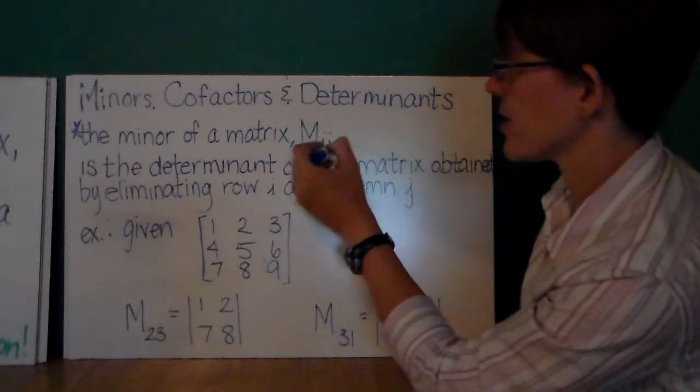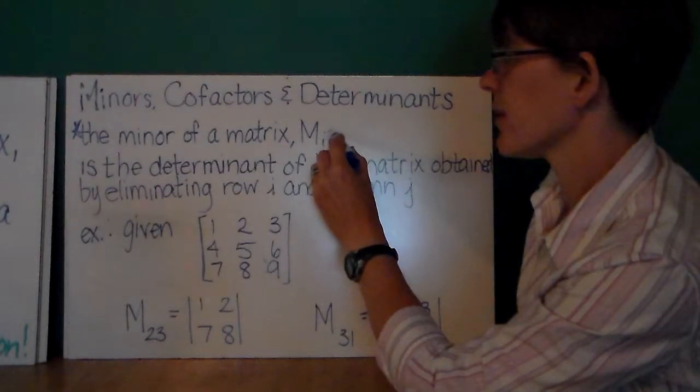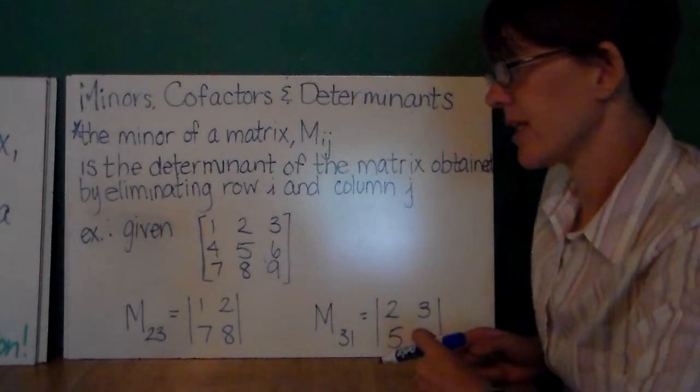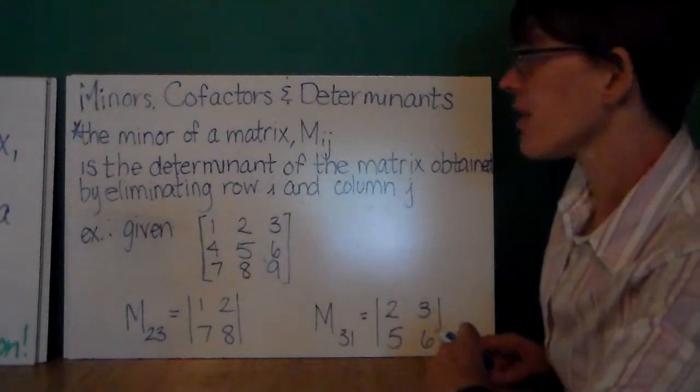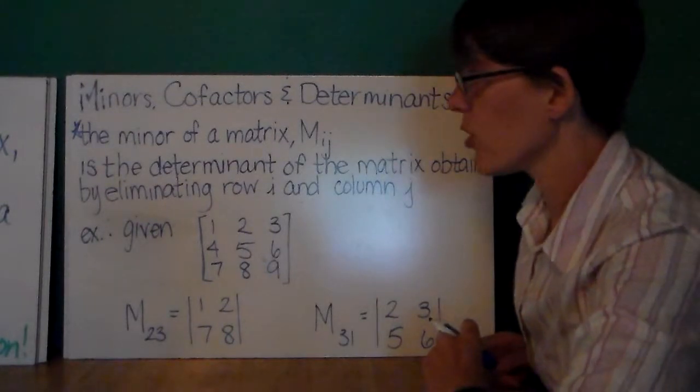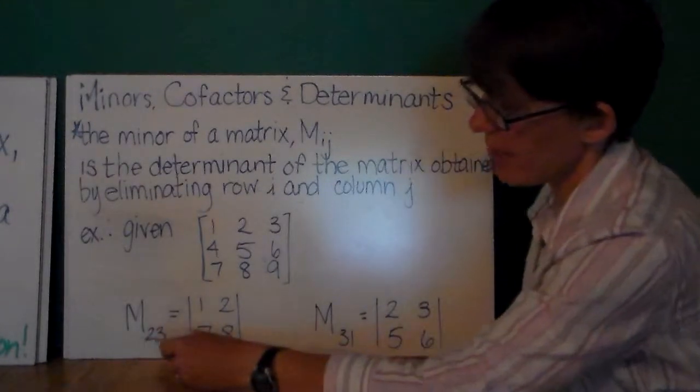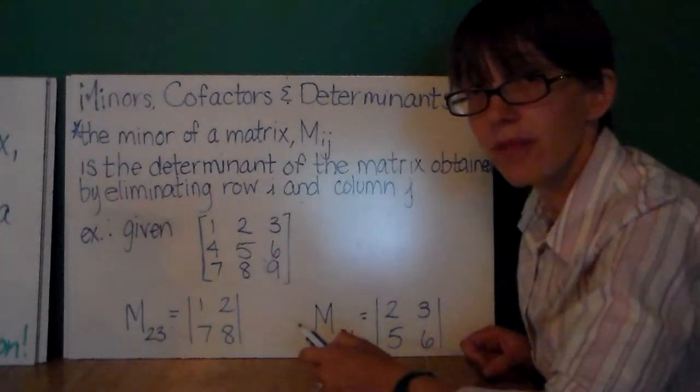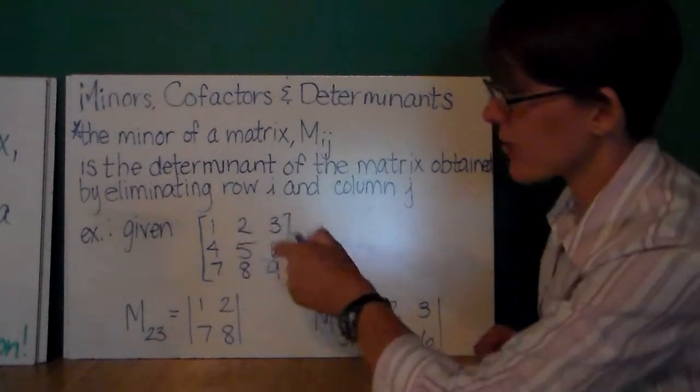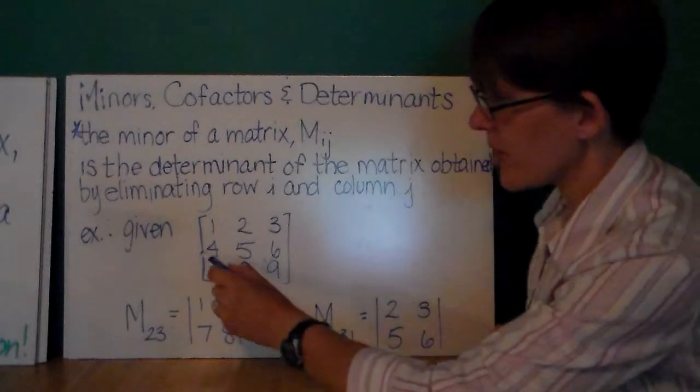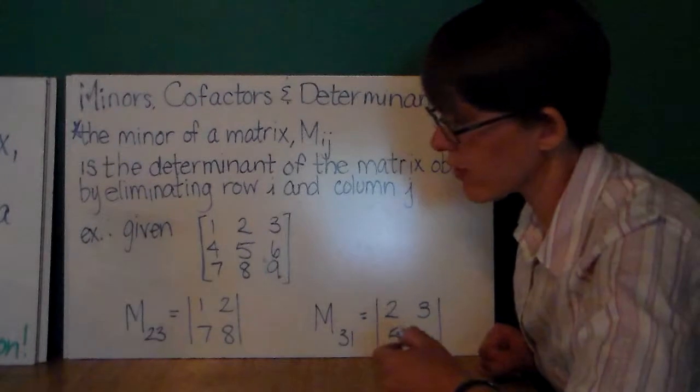So, the minor of the matrix, which is denoted M_ij, this tells the row and the column that we're finding the minor of, is the determinant of the new smaller matrix that we obtain by eliminating row i and column j. Okay. So, if I want to find M_23, this is the second row third column minor of the matrix shown here.